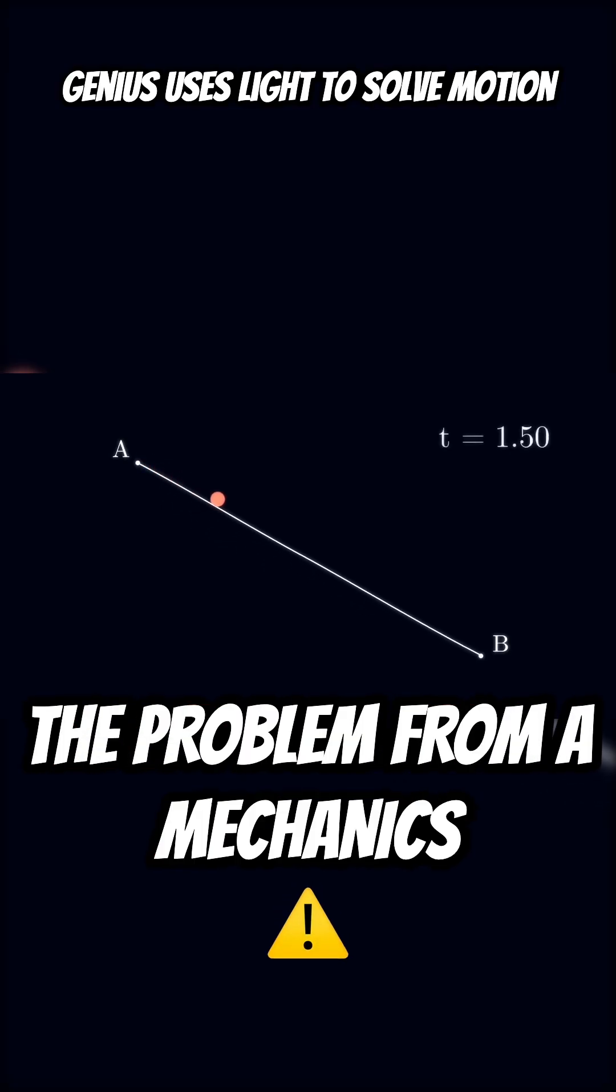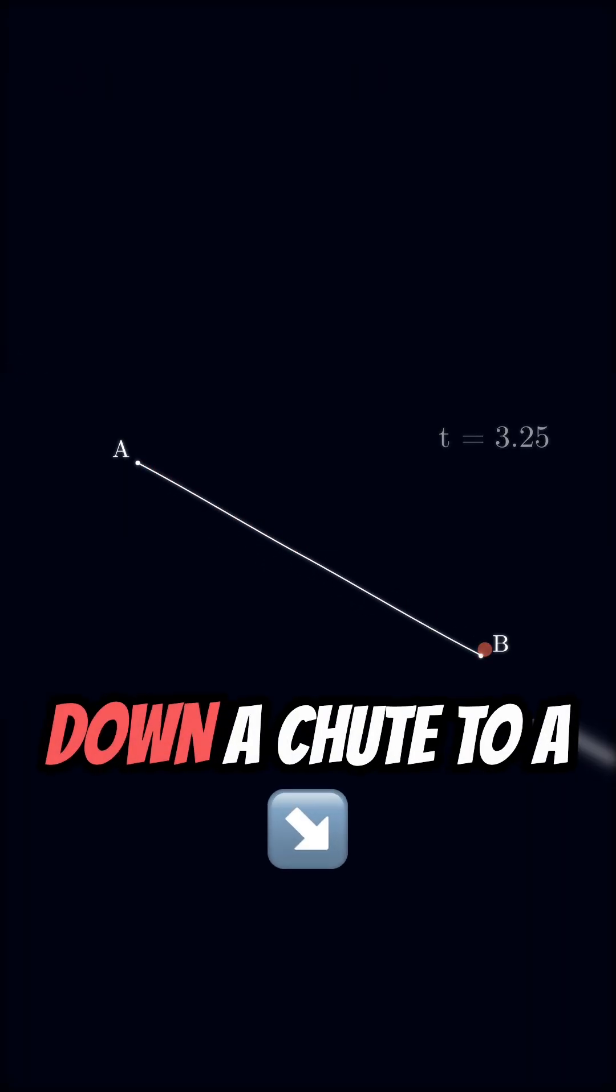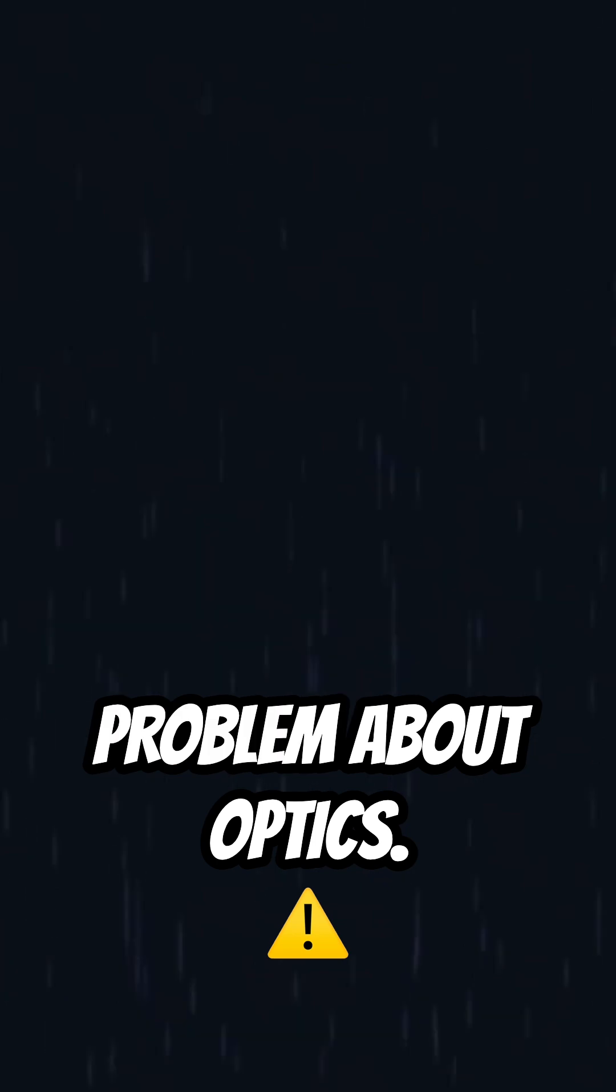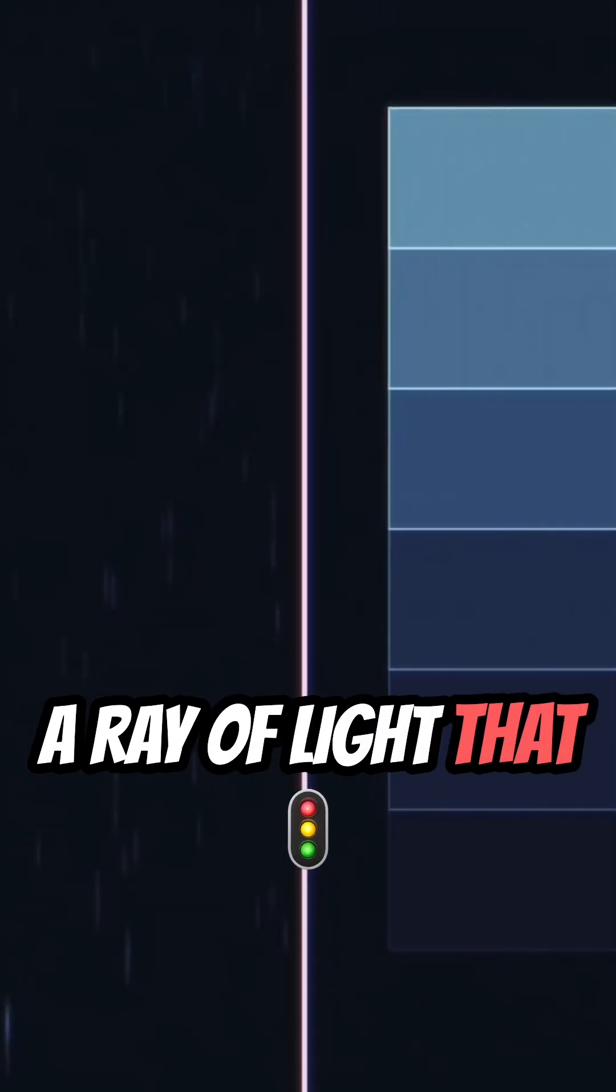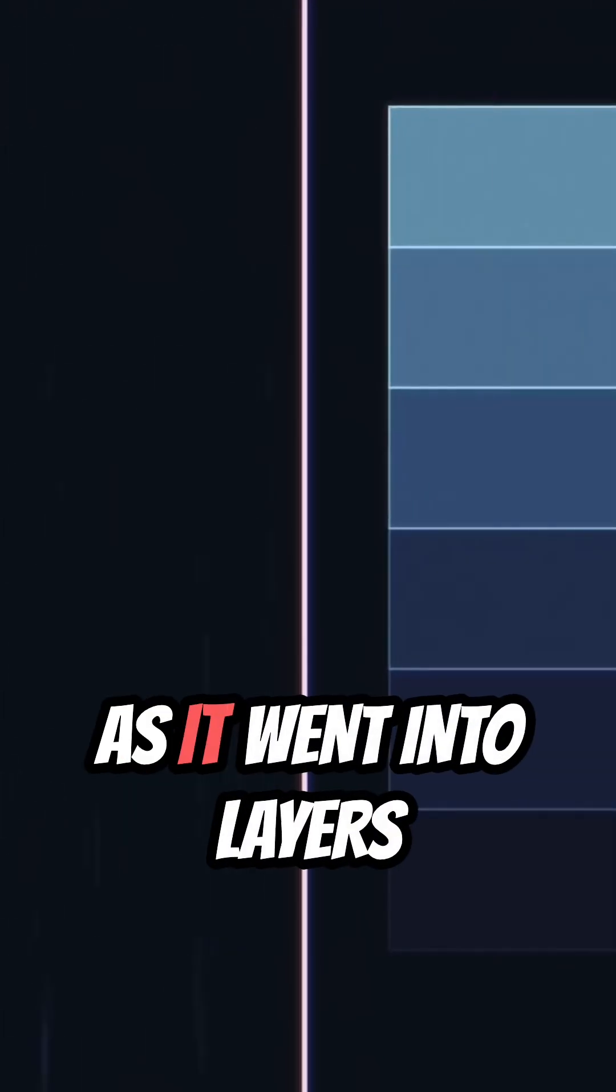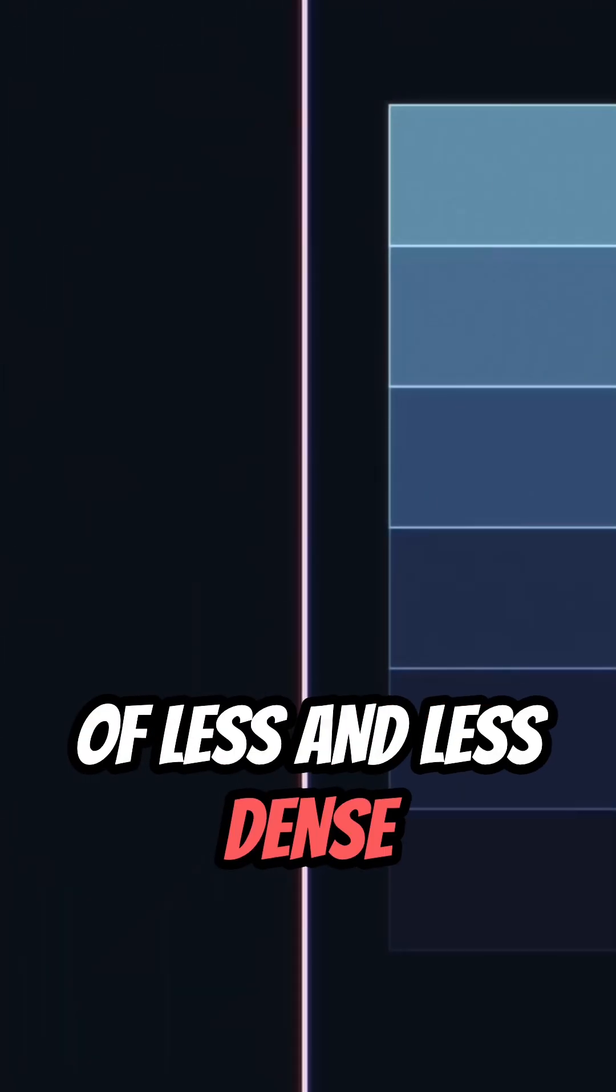He converted the problem from a mechanics problem about a particle sliding down a chute to a problem about optics. Instead of a mass that's accelerated by gravity, he imagined a ray of light that would go faster and faster as it went into layers of less and less dense media.